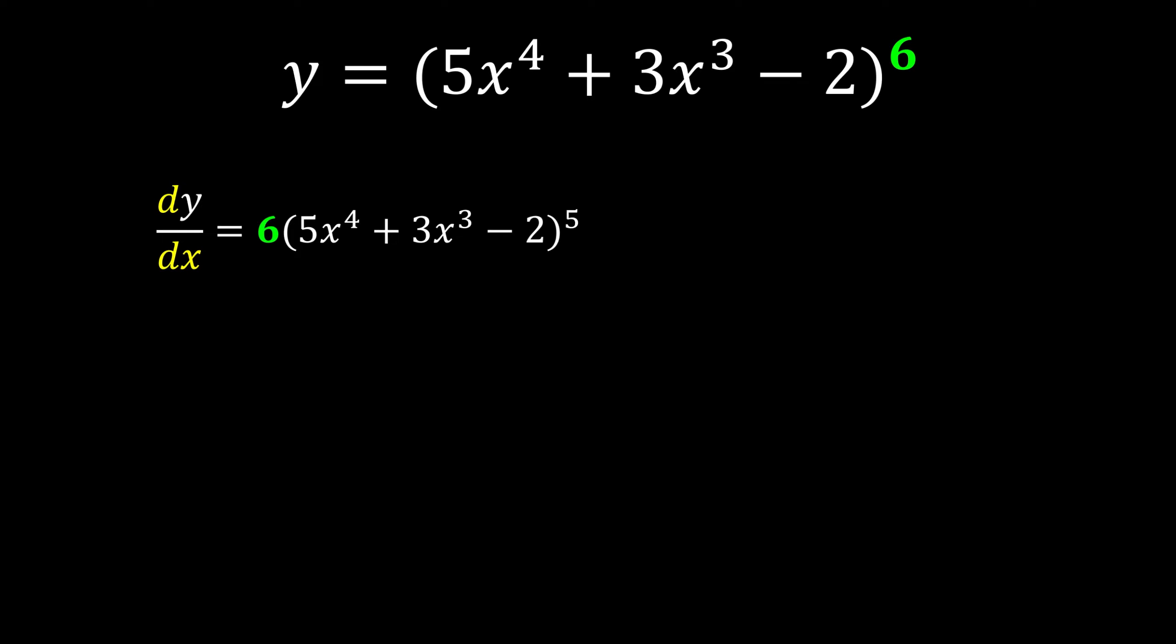What is our second part? Our second part is going to take the derivative of the inner function. So could you differentiate this one? 4, we bring it down, become 20x, 4 minus 1, plus 3. We bring it down, 3 times 3 is 9x, 3 minus 1. And derivative of a constant is always 0. This is why we have 20x cubed plus 9x to the power of 2.